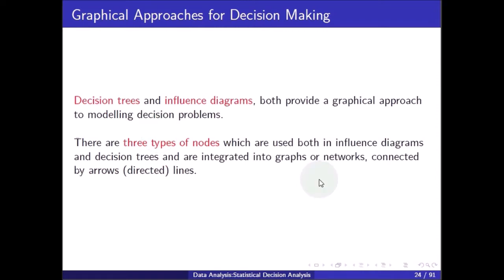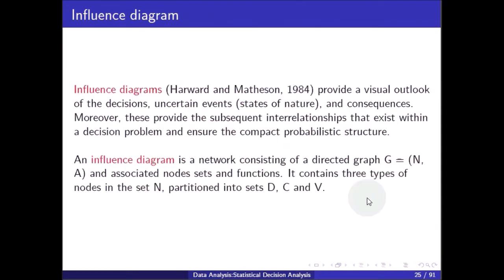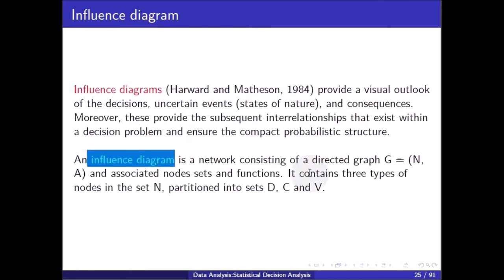An influence diagram provides a visual outlook of the decisions, uncertain events, and consequences. Moreover, these provide the subsequent interrelationships that exist within a decision problem and ensure a compact probabilistic structure. An influence diagram is a network consisting of a directed graph G = (N, A) with associated node sets and functions. It contains three types of nodes where the set N partitions into sets D, C, and V.